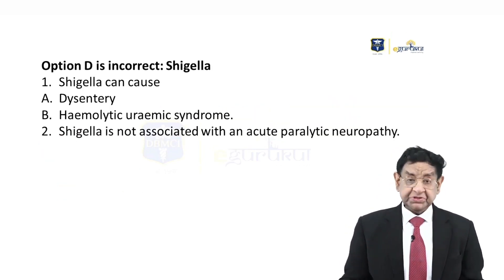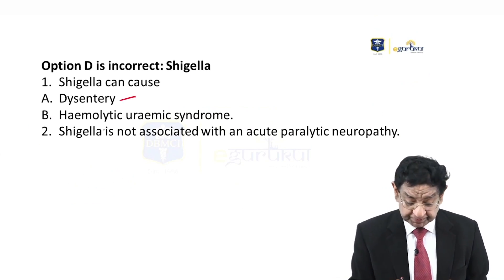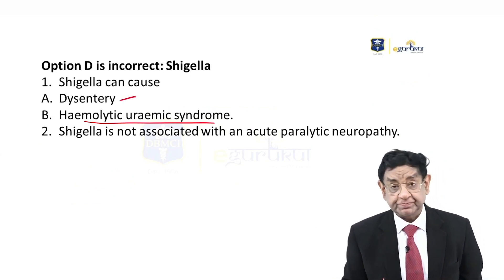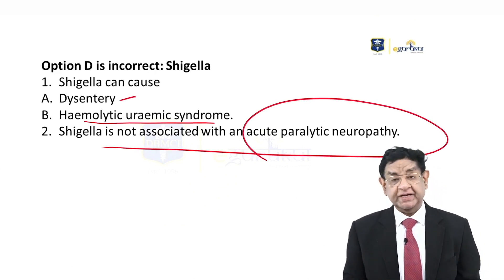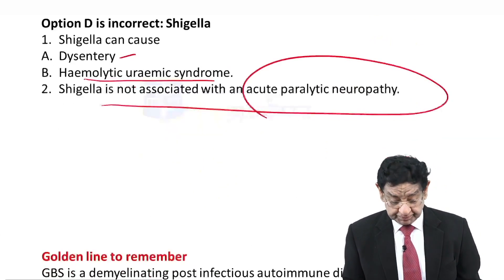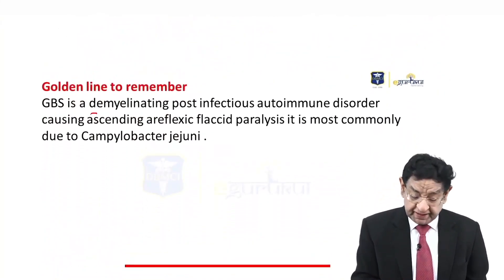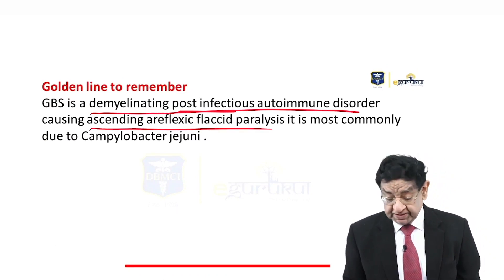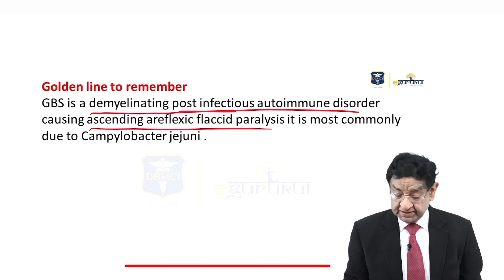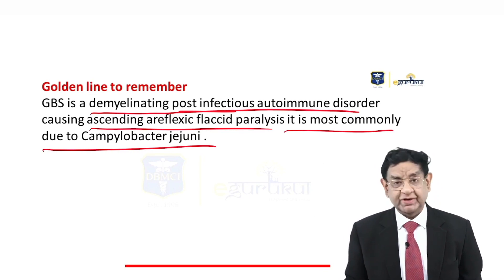Shigella causes dysentery and hemolytic uremic syndrome; it is not associated with acute paralytic neuropathy. The golden line to remember: GBS is a demyelinating post-infectious autoimmune disorder causing ascending areflexic flaccid paralysis, most commonly due to Campylobacter jejuni.